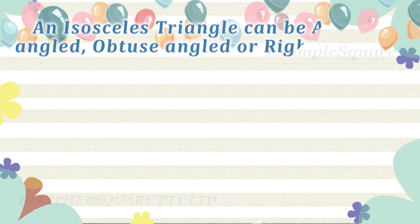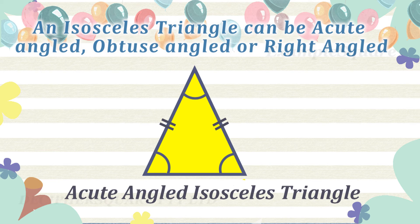An isosceles triangle can be acute angled, obtuse angled, or right angled.